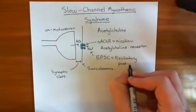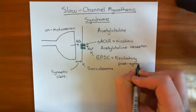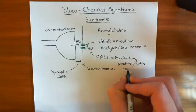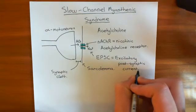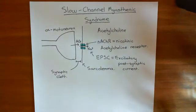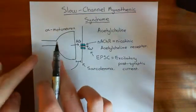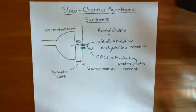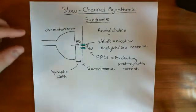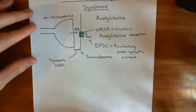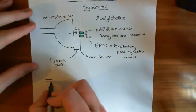Now we'll study this nicotinic acetylcholine receptor in a bit more detail, because it's in the nicotinic acetylcholine receptor at the neuromuscular junction that the problem occurs in slow channel myasthenic syndrome. Overall, the alpha motor neuron releases acetylcholine, activates the nicotinic acetylcholine receptor, which causes an action potential, and that leads to contraction. Let's take it out and have a look at it in more detail.